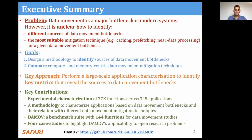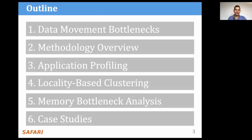And fourth, we showcase how WokitaMove can be used to study open research problems related to data movement with four case studies. WokitaMove is open source and available in our GitHub repository. Here's the outline for this talk. First, I'm going to talk about data movement bottlenecks and mitigation solutions. Then, I'm going to explain our workload characterization methodology, which consists of three steps: application profiling, locality-based clustering, and memory bottleneck analysis. Finally, I'm going to talk about our case studies.